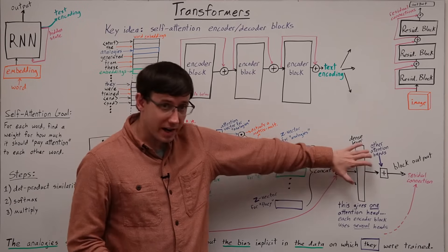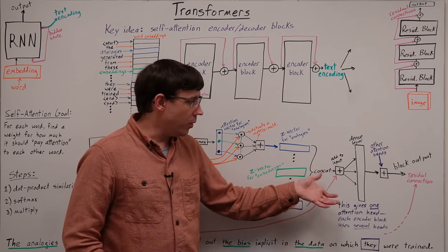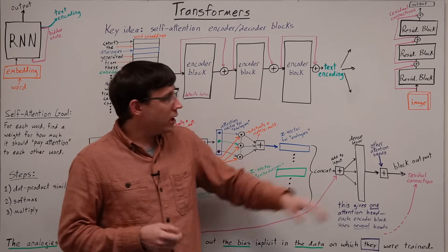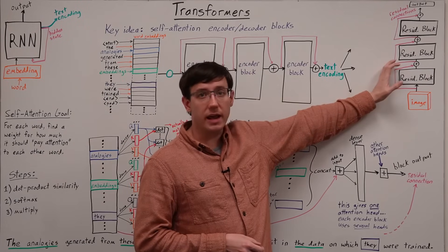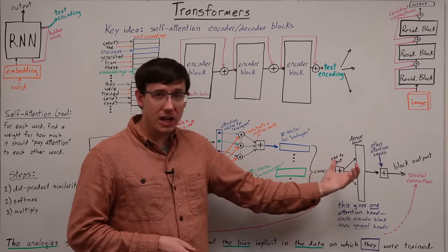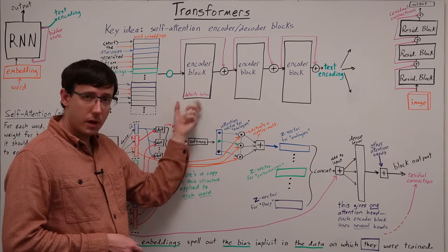From there we'll apply a regular dense layer of matching shape, and this gives the output of one attention head. But, much like we want many channels in a convolutional layer, we often want many attention heads within a given encoder block.